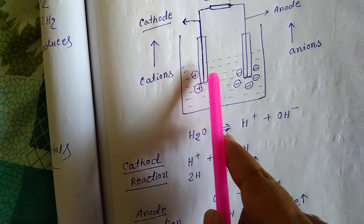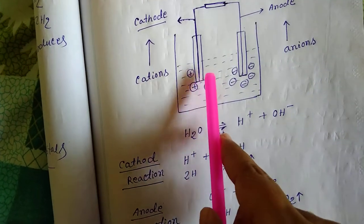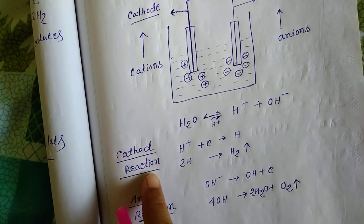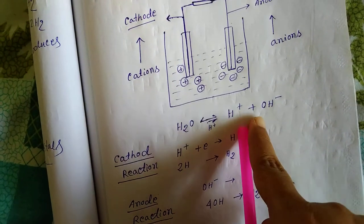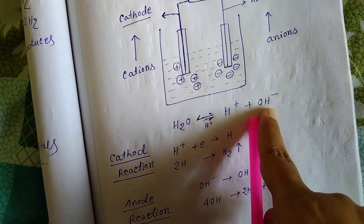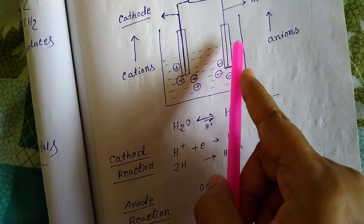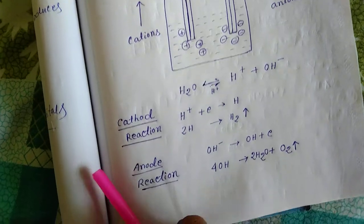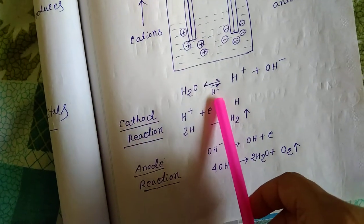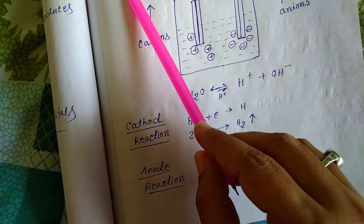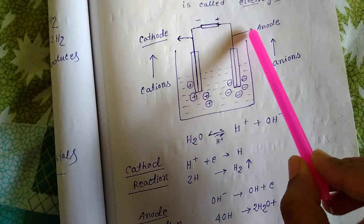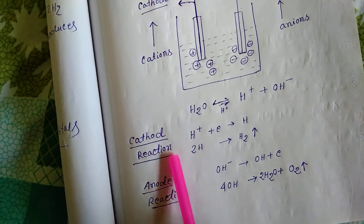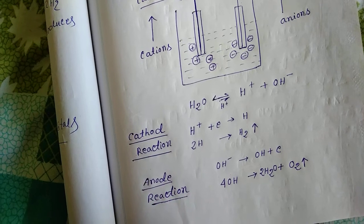The H⁺ ion goes towards the cathode, and the negatively charged OH⁻ ion goes towards the positive electrode, that is, the anode. So cation goes towards the cathode and anion goes towards the anode.